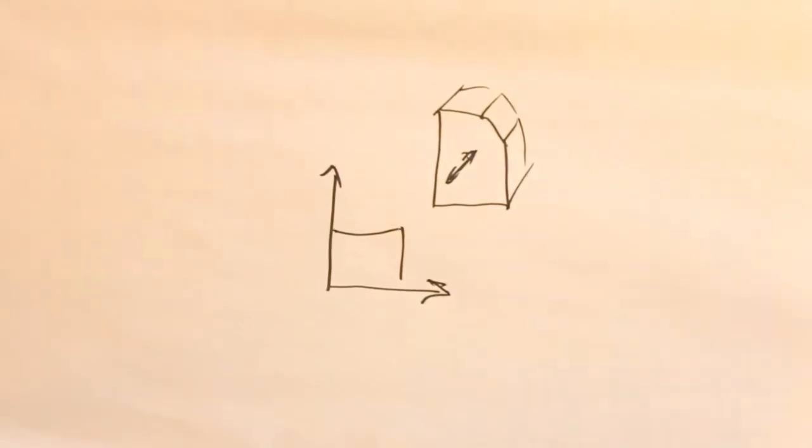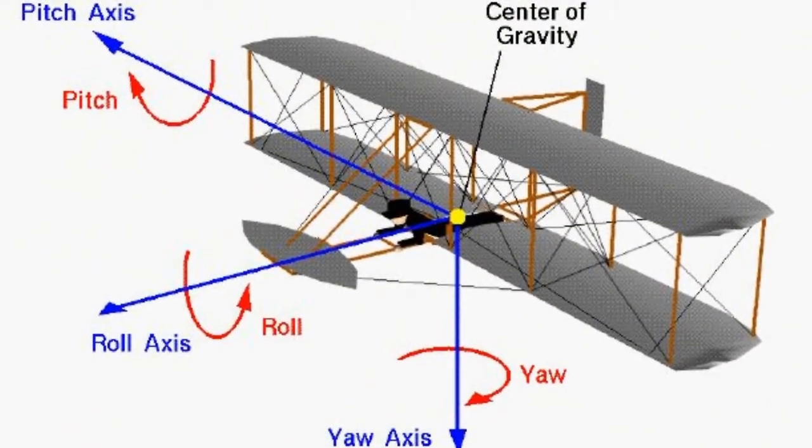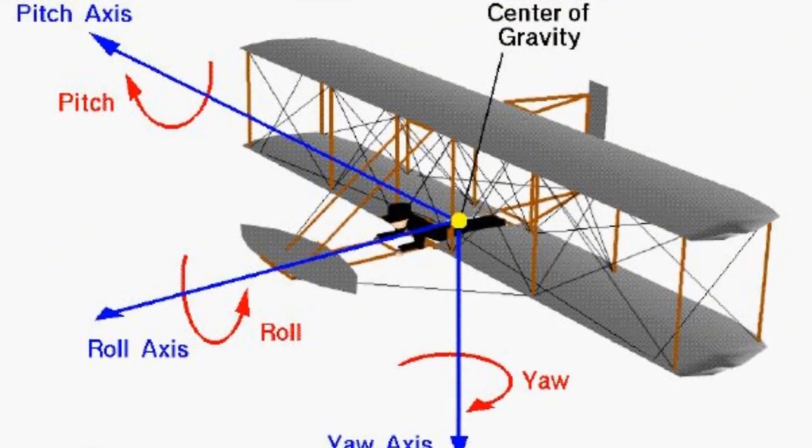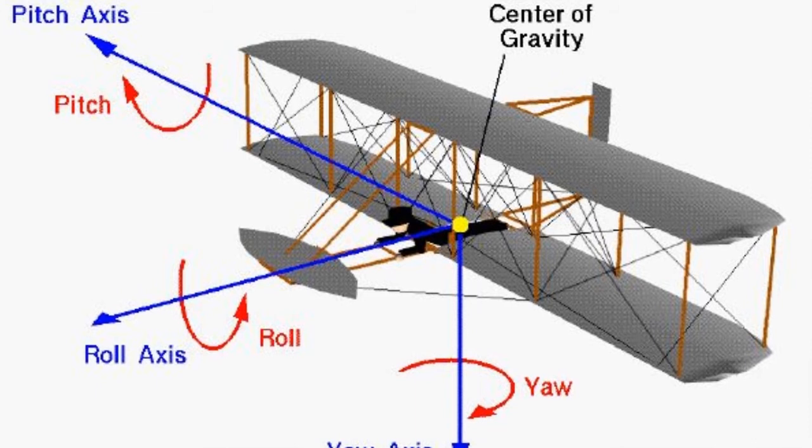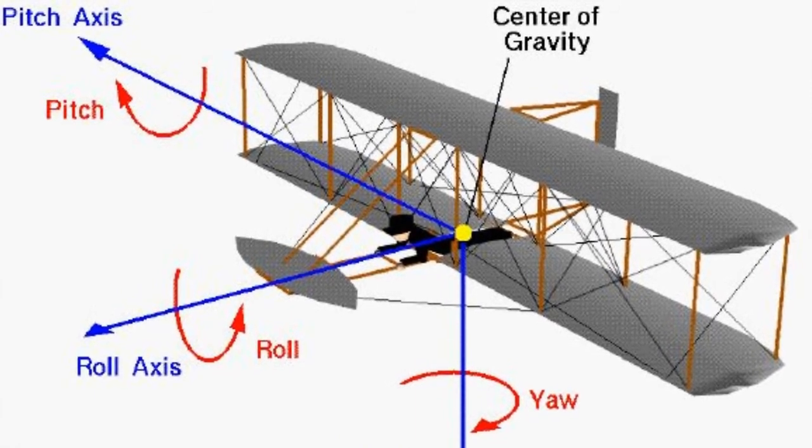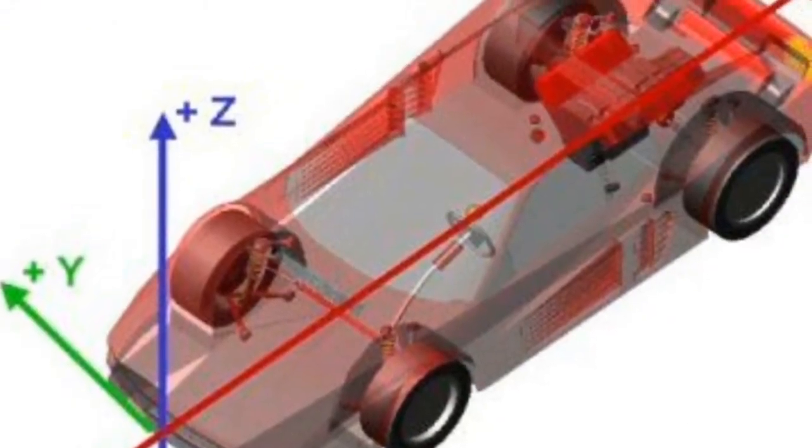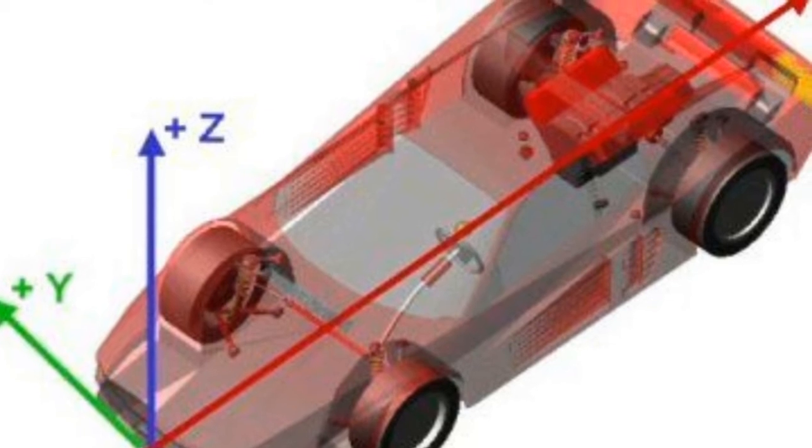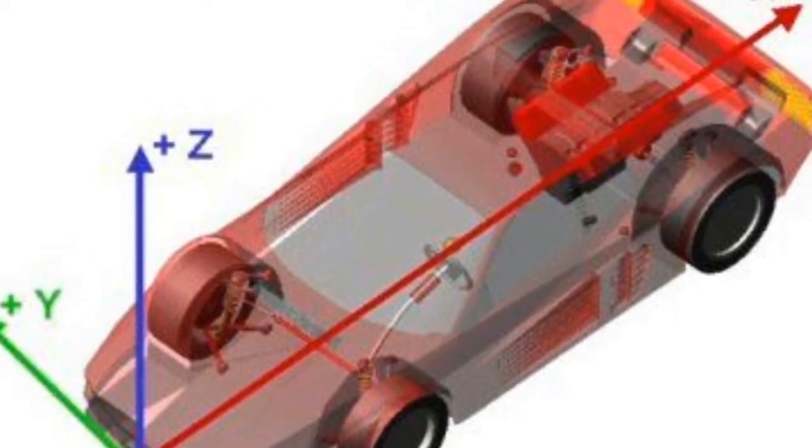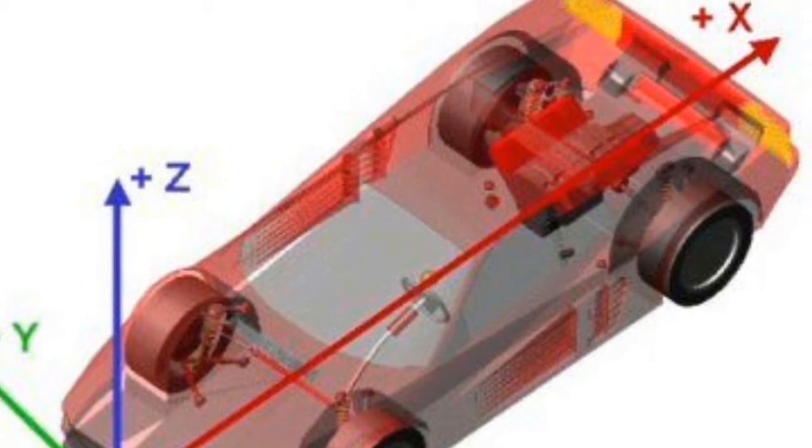It is true that in some industries it is common to design parts in place, like in an airplane or a vehicle coordinate system. For example, an airplane might be designed so that rotation about the X, Y, and Z axis corresponds to the pitch, roll, and yaw axis. Or a car might be designed using a vehicle coordinate system located at the front of the car with X toward the back, Y towards the right side, and Z up.